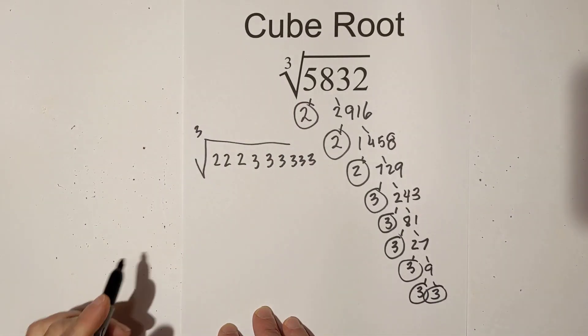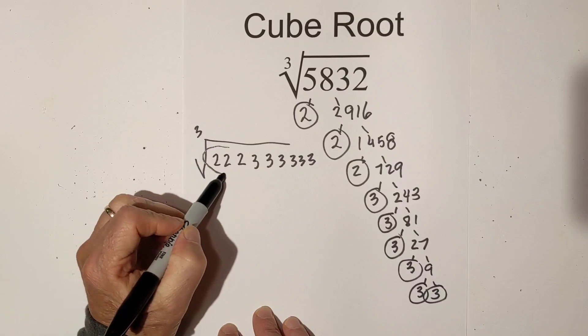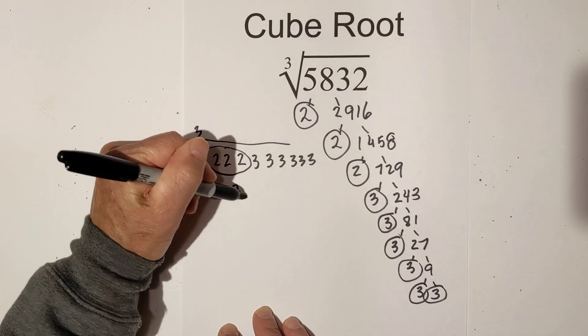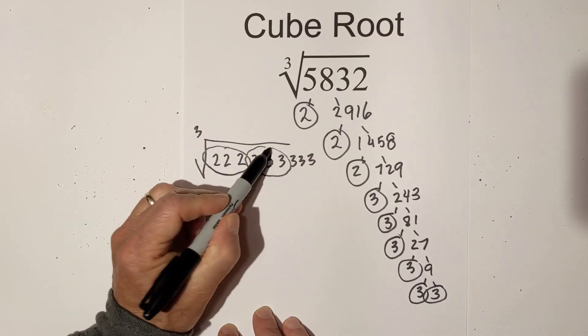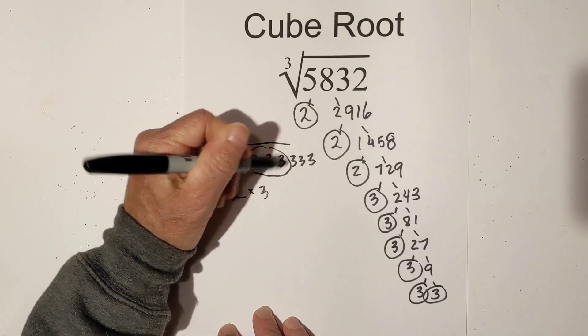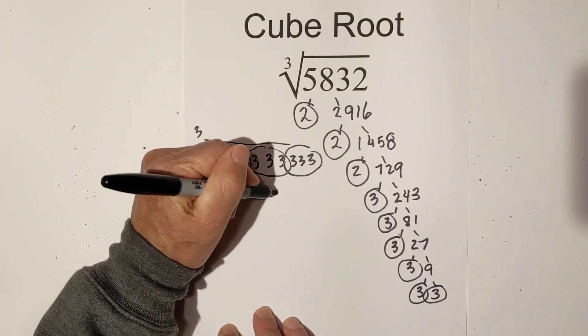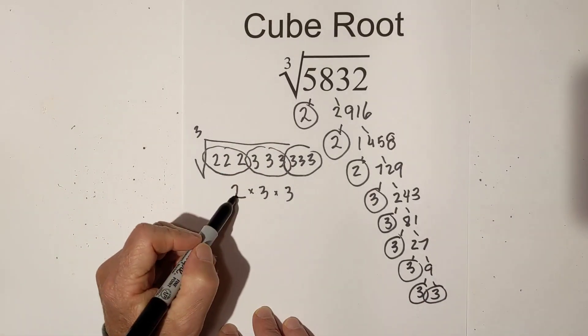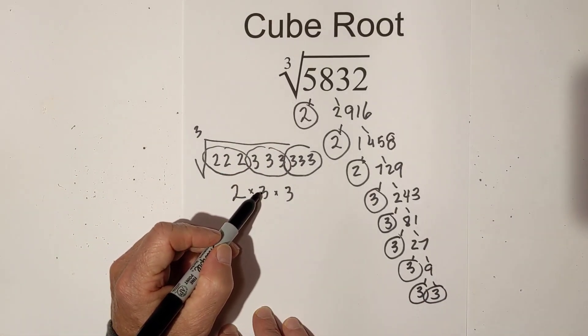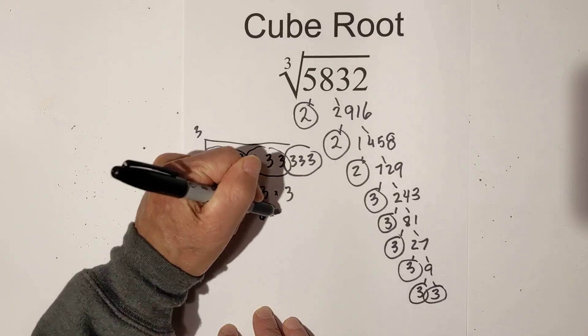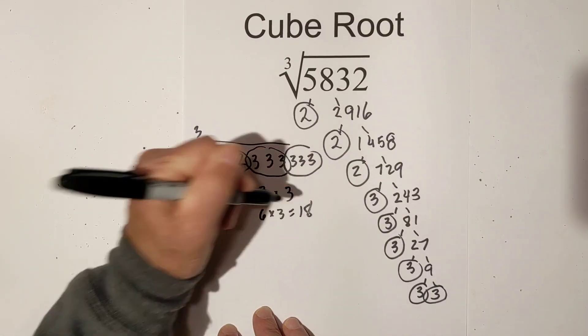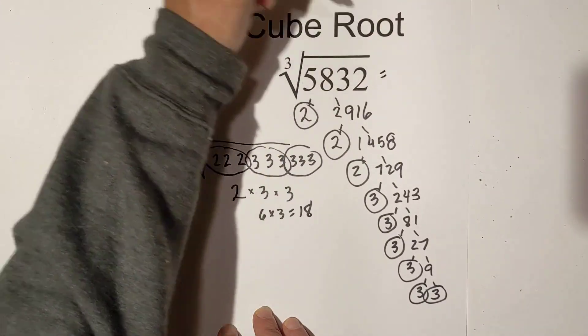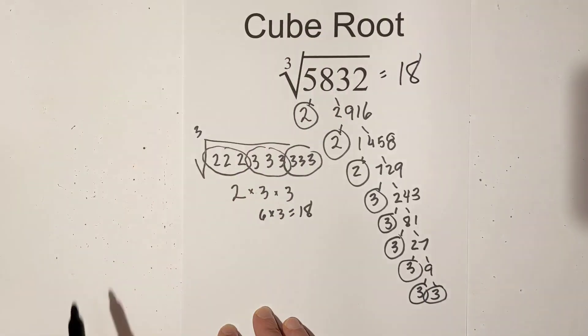And just like before, we can pull out groups of 3's. So we have a 2, we have a 3, and another 3. Now once you have the prime numbers, it's really easy to figure out the cube root. 2 times 3 is 6, and then 6 times 3 equals 18. So the cube root of 5,832 is 18.